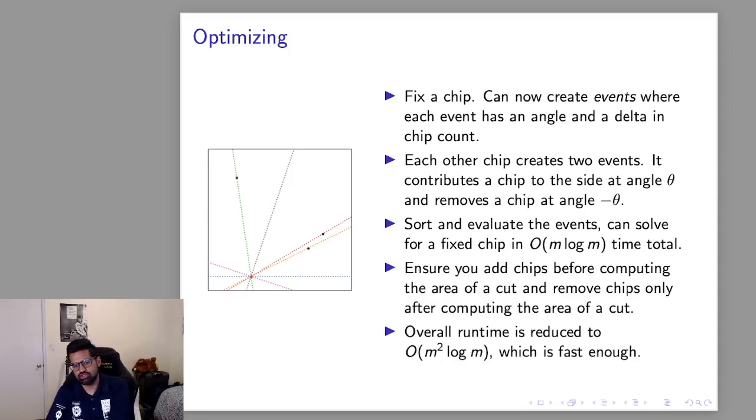One implementation note that may trip up some teams: when you add a chip you want to add that chip before you consider the area of that cut. But when you remove a chip you want to remove the chip after considering the area of the cut. And this is because if a line passes through a chip the chip can count for either side so we always want to count it for our side.